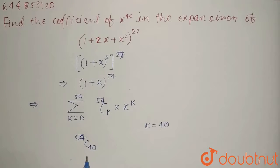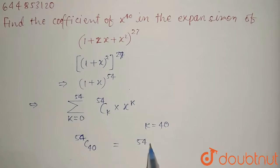This will be the coefficient of x to the power 40, and that equals 54 factorial upon 40 factorial into 14 factorial.